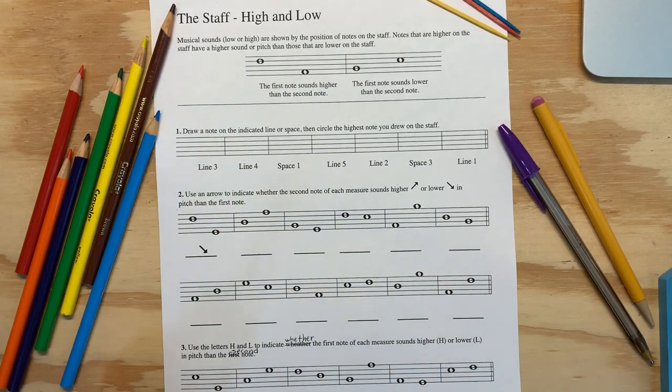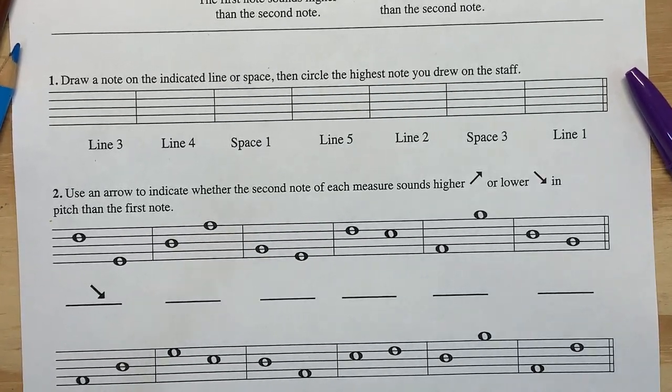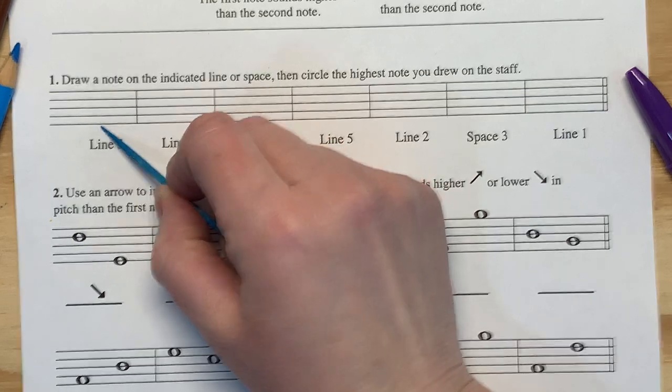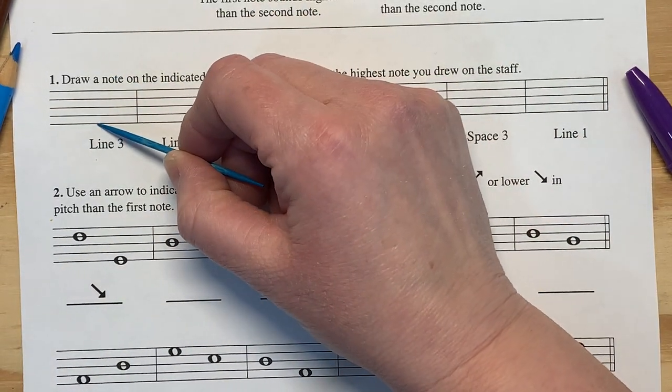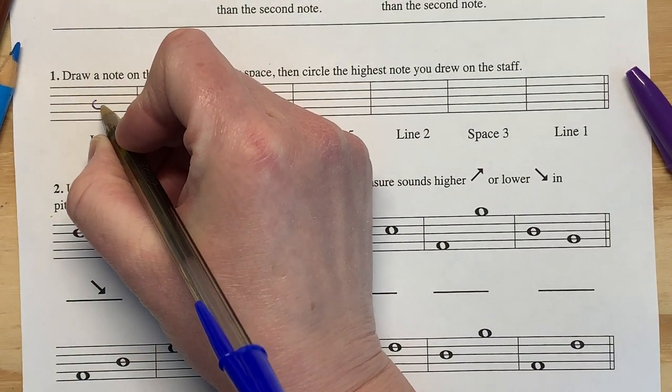So now we're going to draw some notes on the lines or spaces of the staff. Again use your toothpick as a tool if you're having trouble counting. I'm one two three. We're going to keep using those whole notes so you can see.